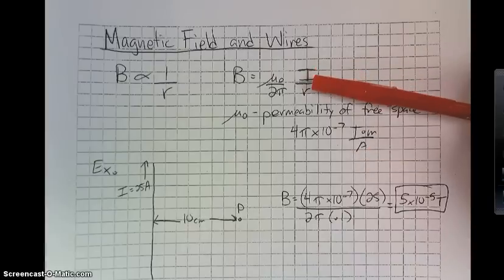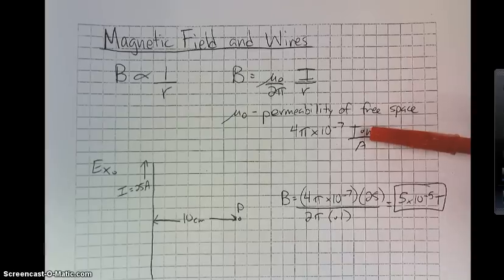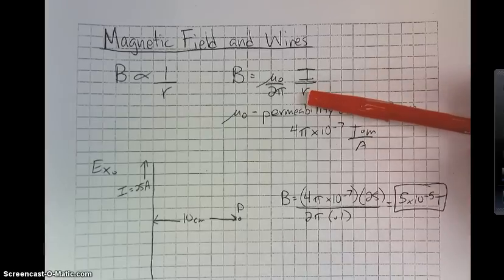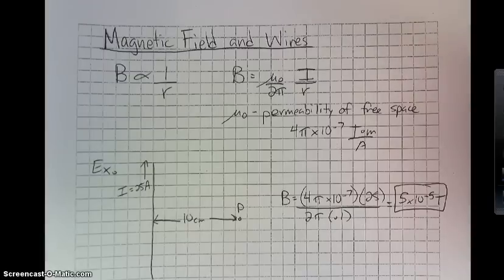But you'll notice that you've got 4π × 10⁻⁷ Tesla meters per amp. The amps is on the bottom to cancel the current on the top. The meters is on the top to cancel the meters from the radius on the bottom. And you're left with Teslas, which is our unit of magnetic field.